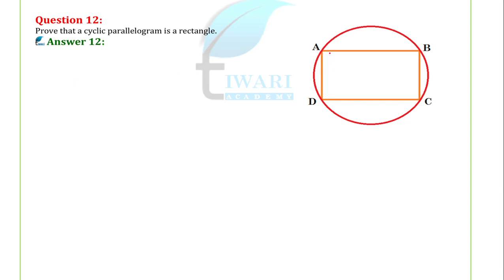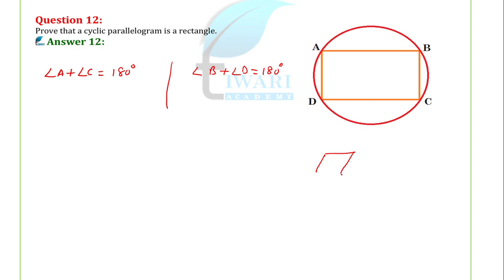Angle A opposite is C and angle B opposite is D. So angle A plus angle C will be 180 degree, and angle B plus angle D will be 180 degree. Kyoki ABCD is a parallelogram — in a parallelogram opposite angles are equal, means angle A will be equal to angle C and angle B will be equal to angle D. Let angle A equal to angle C be X, and angle B equal to angle D be Y.